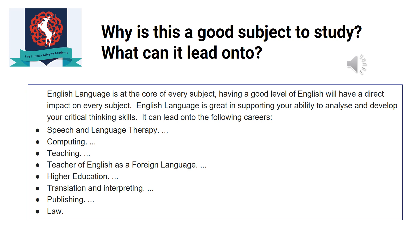English is really important if you're going into law or publishing, and developing your spoken language is important for medicine. It also supports teaching, computing, and going on to higher education. Having your two qualifications in English language and English literature is required to get into sixth form, and your English GCSE is one of the most important GCSEs you will have — it follows you for every single job that you do.